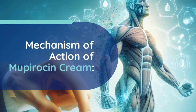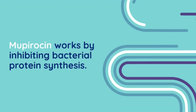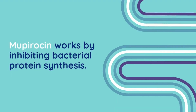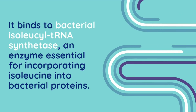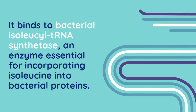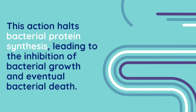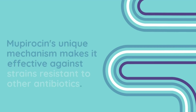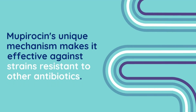Next, mechanism of action of Mupiracin Cream. Mupiracin works by inhibiting bacterial protein synthesis. It binds to bacterial isoleucil tRNA synthetase, an enzyme essential for incorporating isoleucine into bacterial proteins. This action halts bacterial protein synthesis, leading to the inhibition of bacterial growth and eventual bacterial death. Mupiracin's unique mechanism makes it effective against strains resistant to other antibiotics.